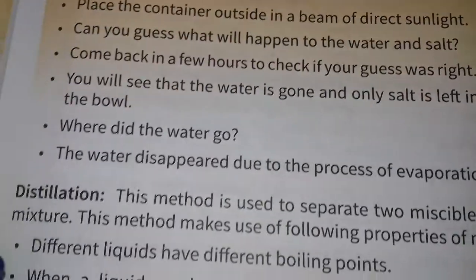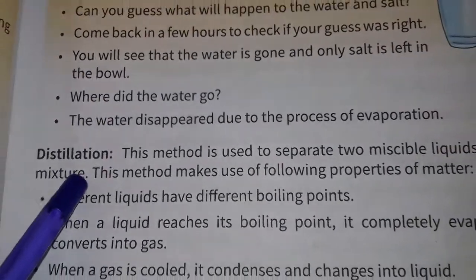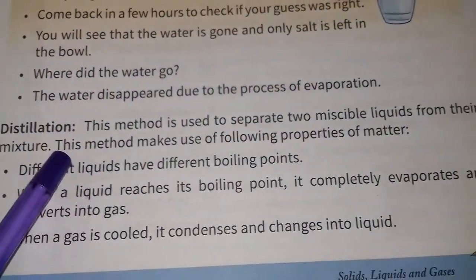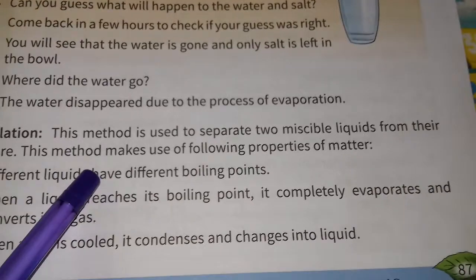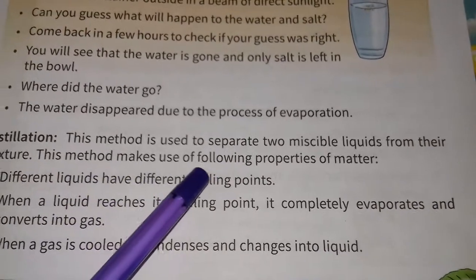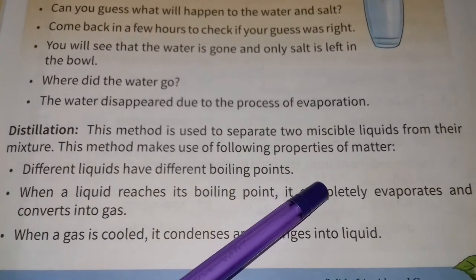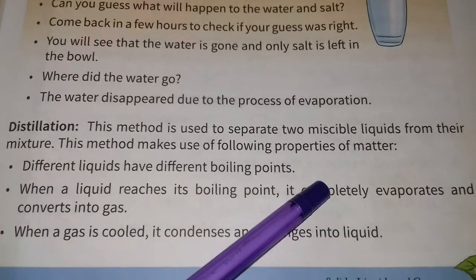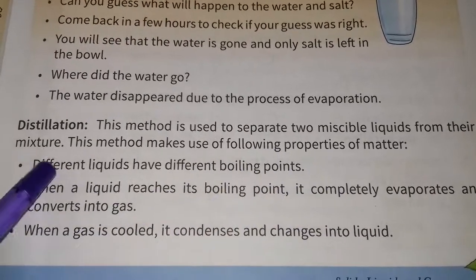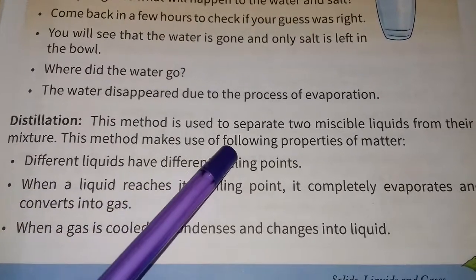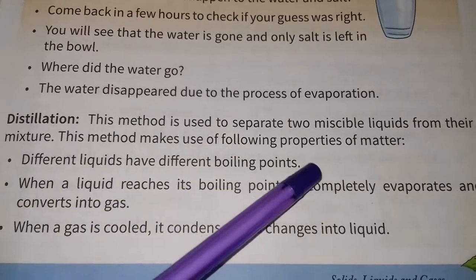The next process is distillation. Distillation is the method used to separate two miscible liquids from their mixture. This method makes use of the following properties.